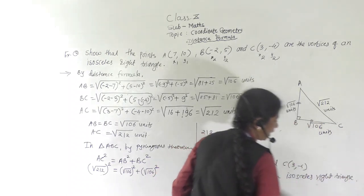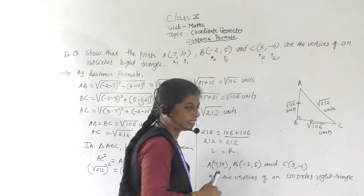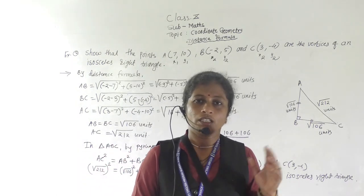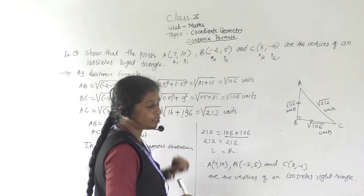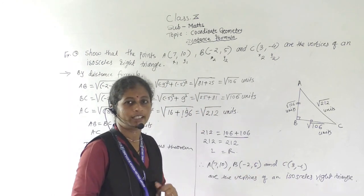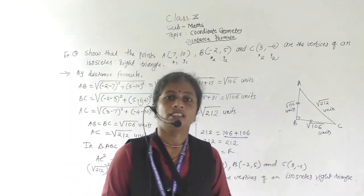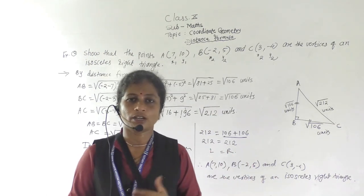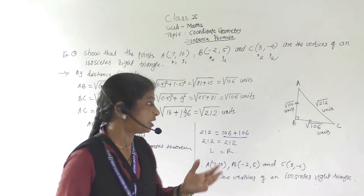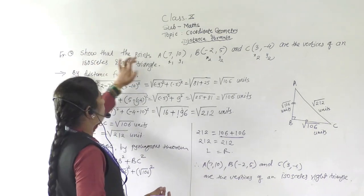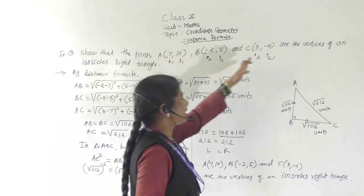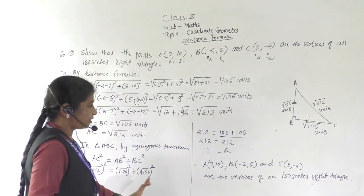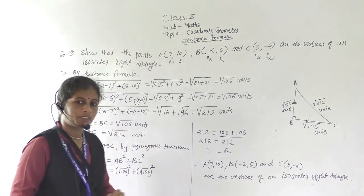For problems like these, we must remember the properties of the given figure — whether it is an isosceles right triangle, equilateral, scalene, rhombus, square, and so on — and show that the given points satisfy those properties. Thank you.